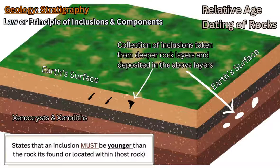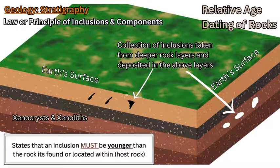The difficulty or complexity of this principle comes with how these inclusions got to be in the rock in the first place — what brought them there, what was the process or mechanism that produced this situation geologically. Now if you have an igneous rock, let's say a lava or magma flow, and you find little inclusions within the igneous rocks, they're called xenoliths. And if you find a mineral crystal within the igneous rock, it's called a xenocryst.